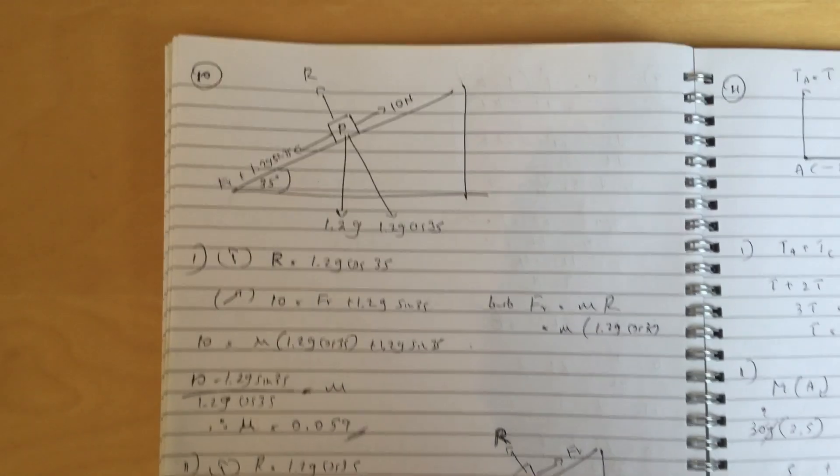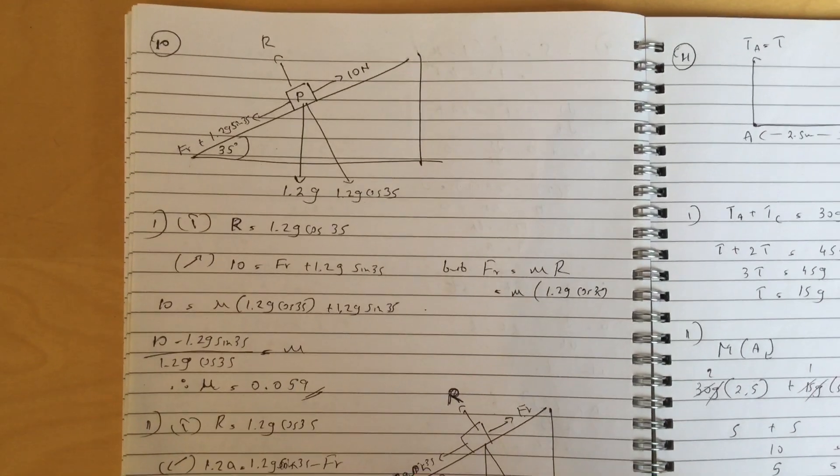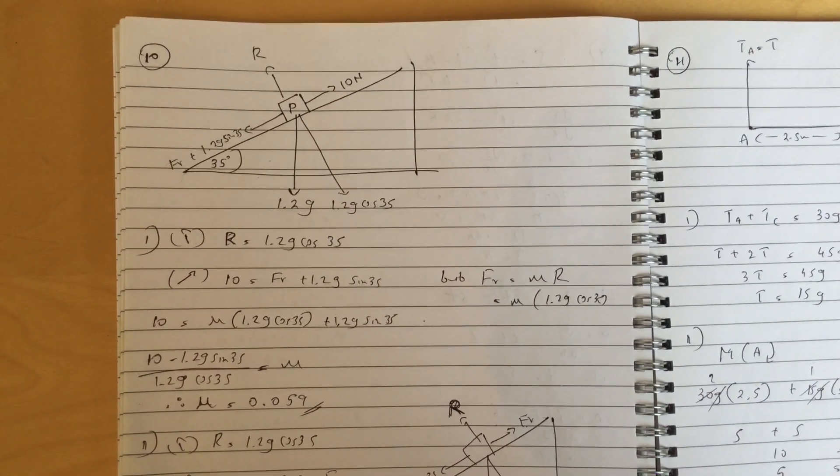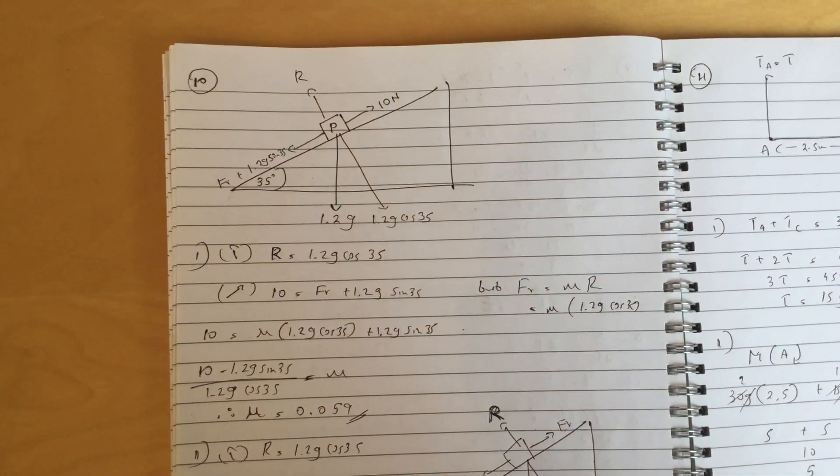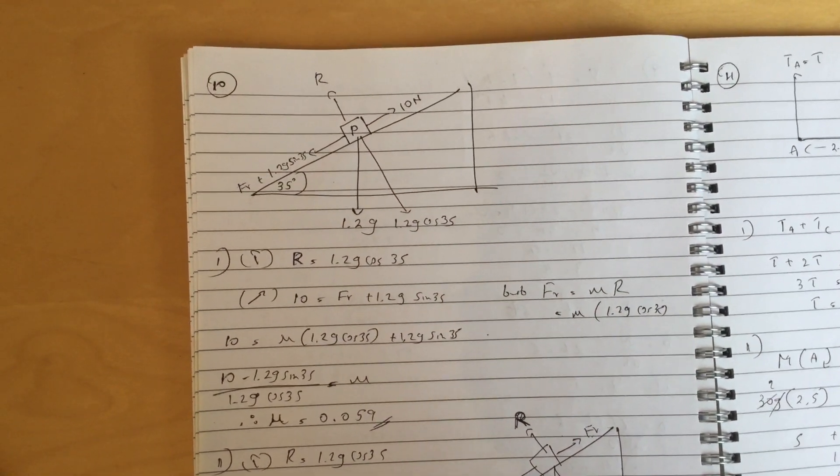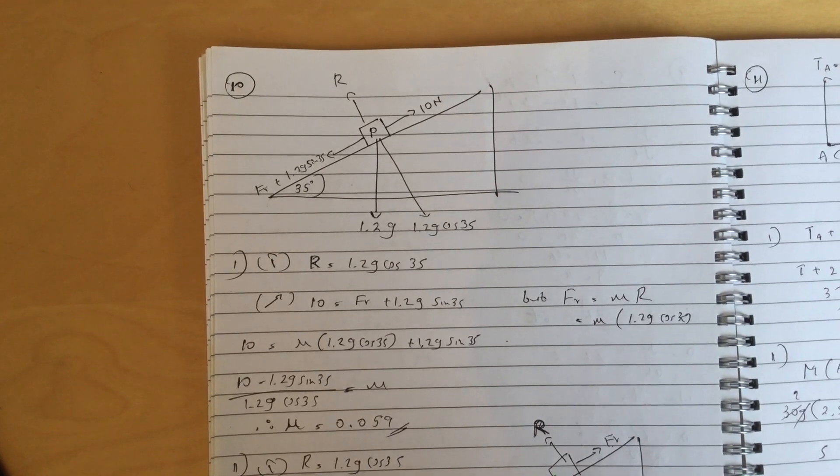Question 10 part 1. Okay, make sure you draw a clear diagram with all the forces, and you resolve horizontally, vertically, and using f equals mu r. Remember, friction is acting downwards if it's about to go up, and mu works out to be 0.059 to 2 significant figures there.